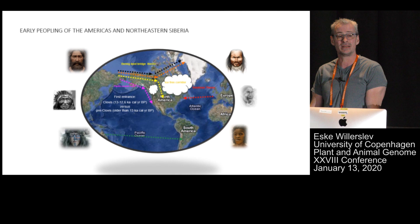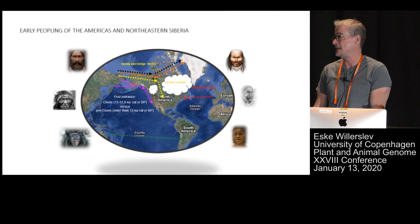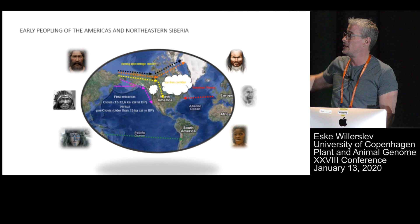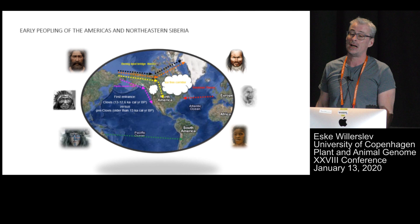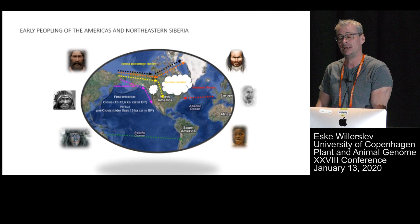Nevertheless, it still remains one of the most debated areas — both in terms of when did humans arrive, where did they come from, and what is the relationship of the first humans in America to present-day Native American populations. There's also a huge debate about what routes humans took to enter the continent. The schoolbook example is that they went into Alaska around 14,000 years ago, but the way to the lower 48 states and South America was blocked by two massive ice caps. When those melted back, an interior ice-free corridor was formed and humans could move through there, creating the so-called Clovis complex around 13,000 years ago.